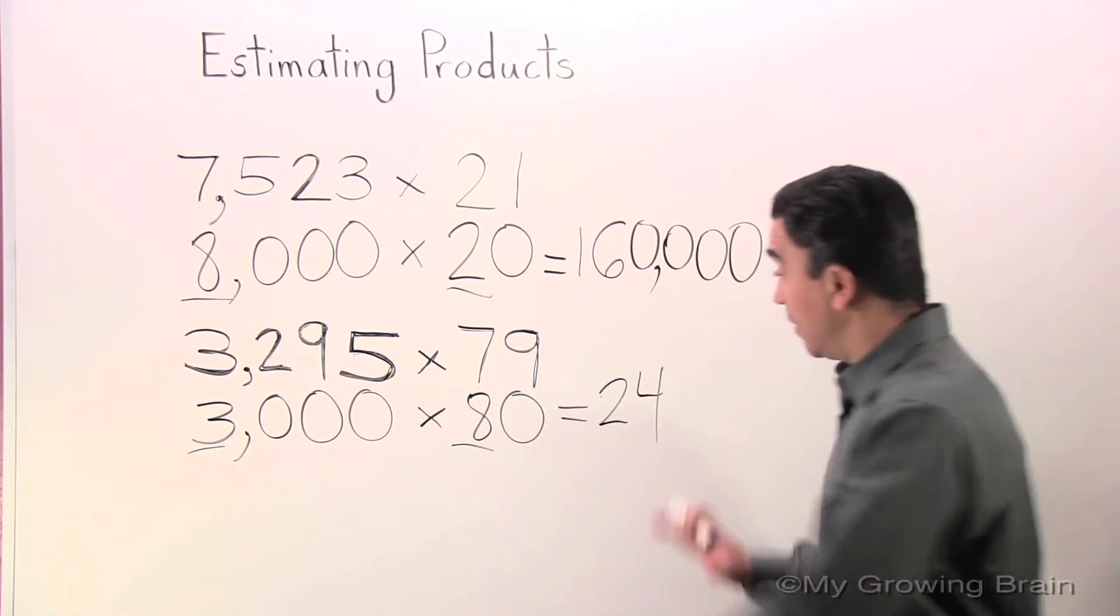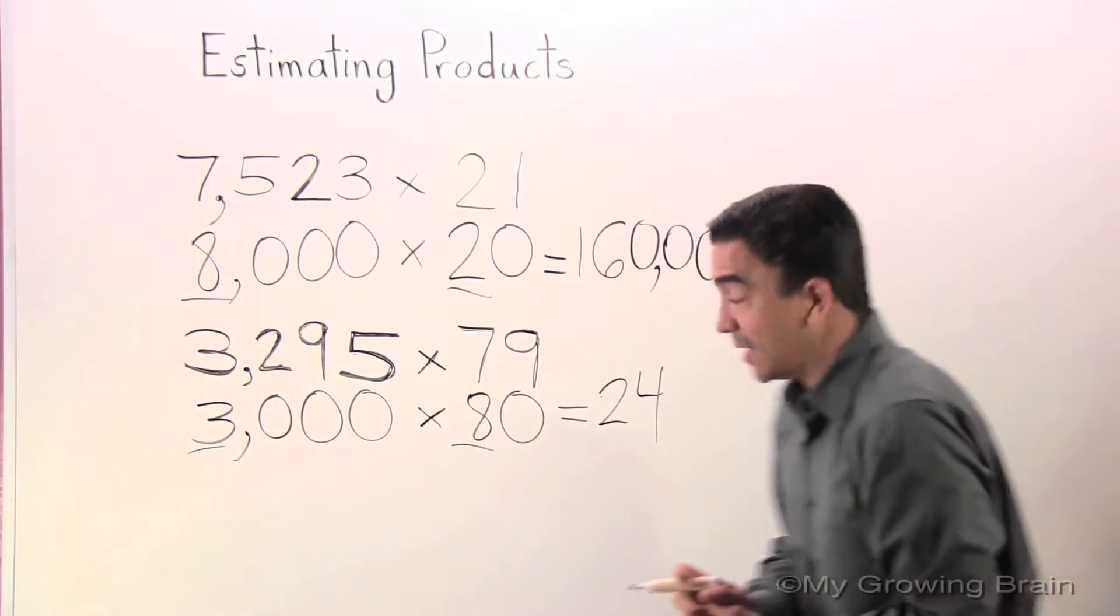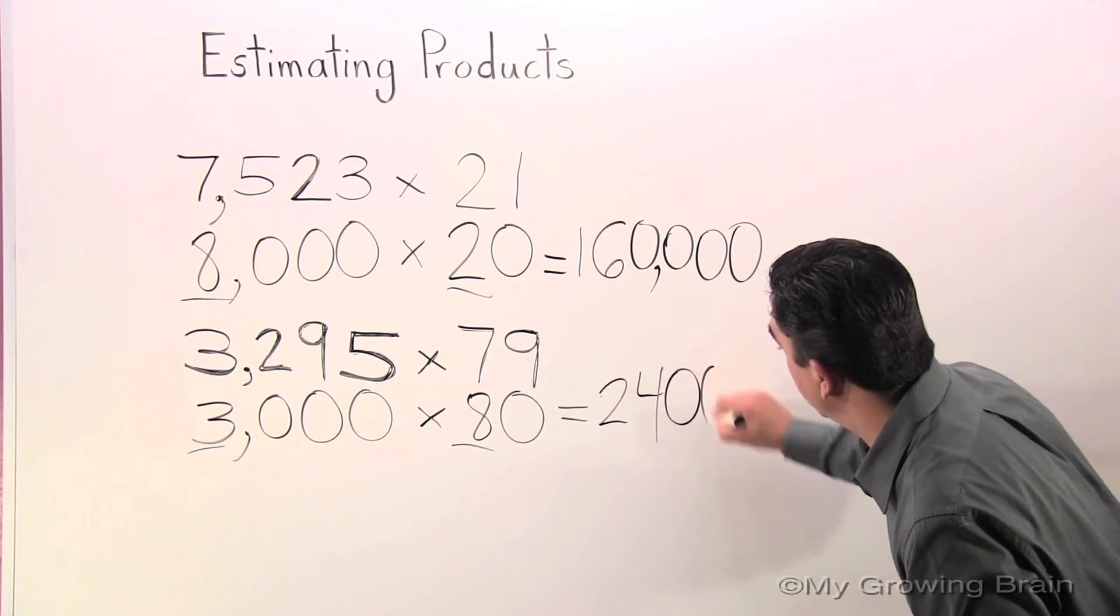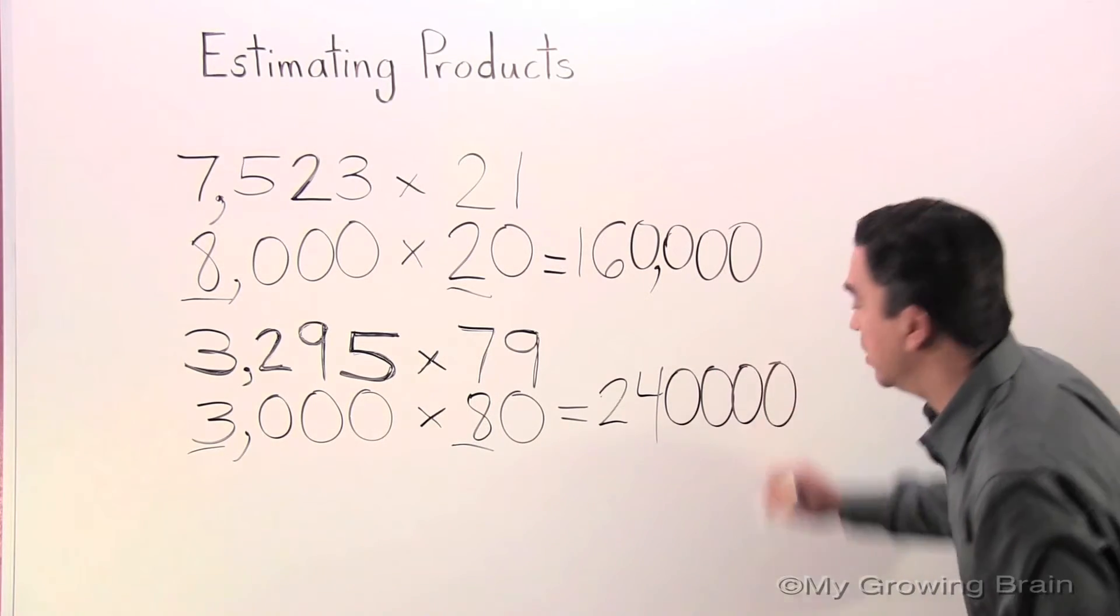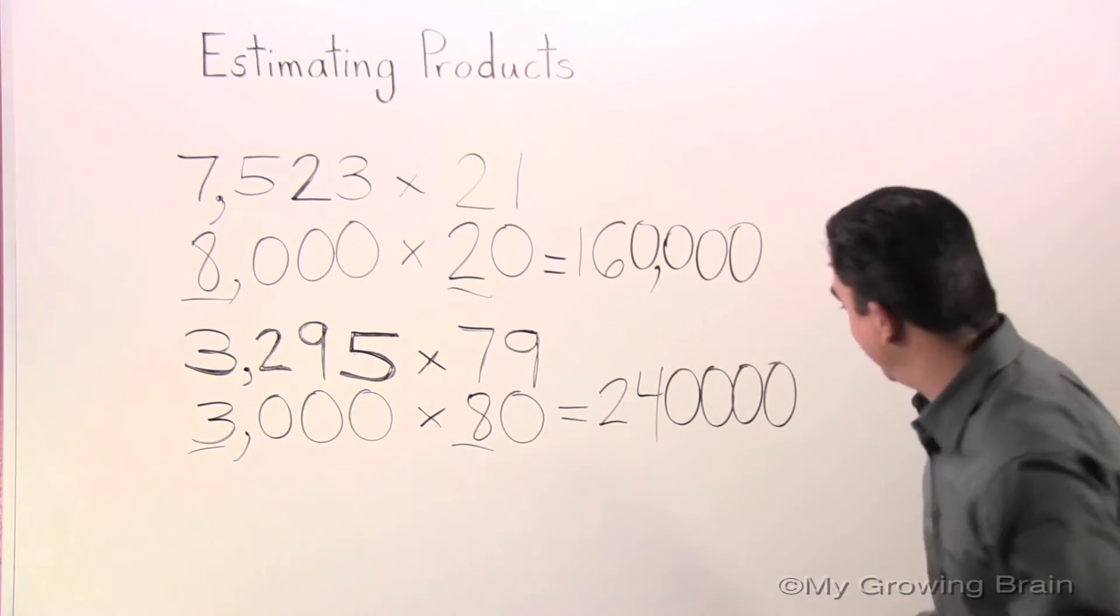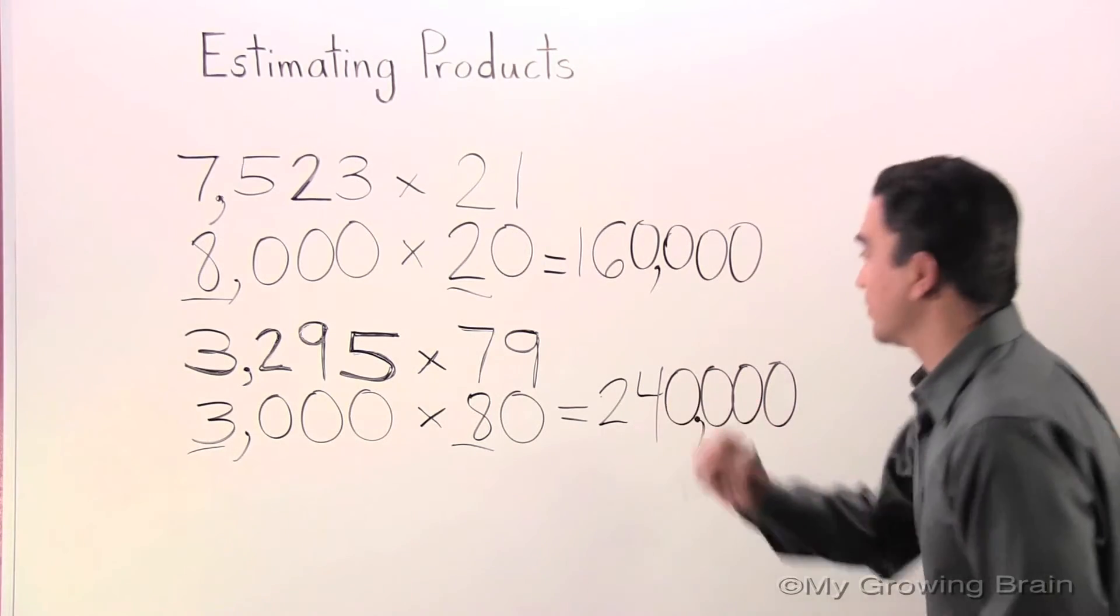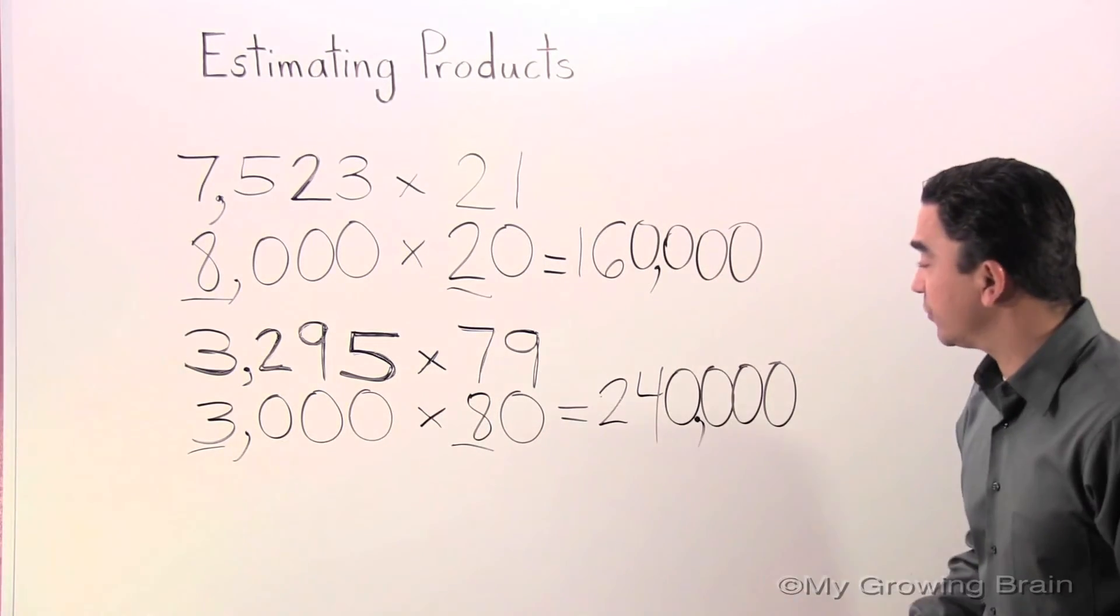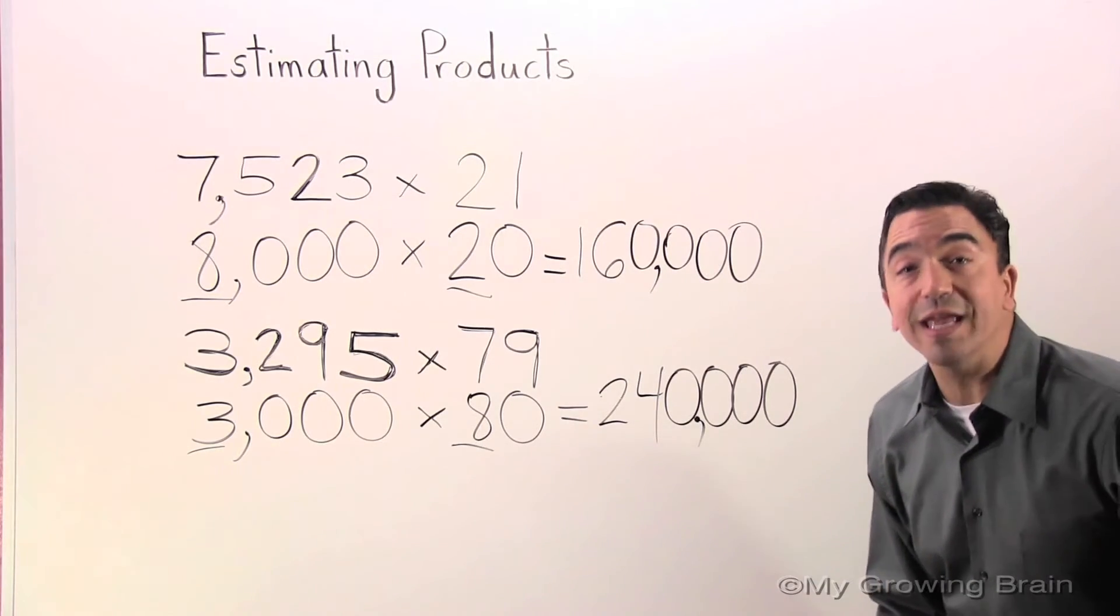I'm going to grab my four zeros and put them after the 24. One, two, three, four. Don't forget the comma. 3,000 times 80 equals 240,000.